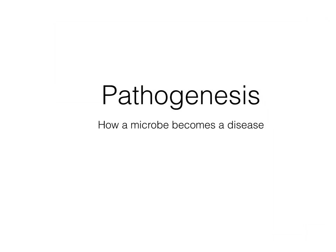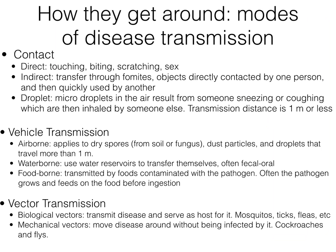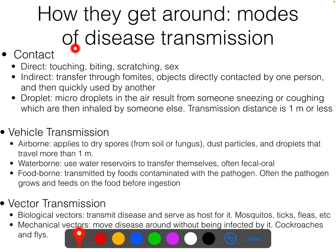Now for how diseases get around — modes of transmission. There are three main ways, and I'm going to give examples of each. Most diseases can actually get around by more than one way. The first is contact, and contact can be either direct, indirect, or droplet.